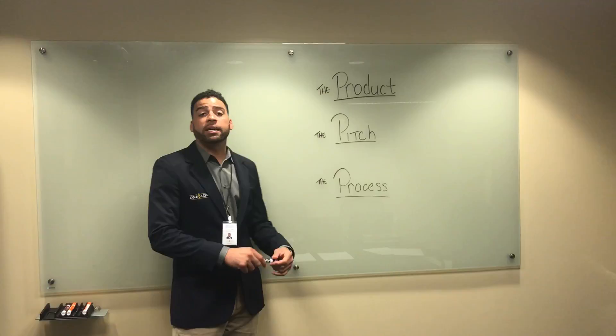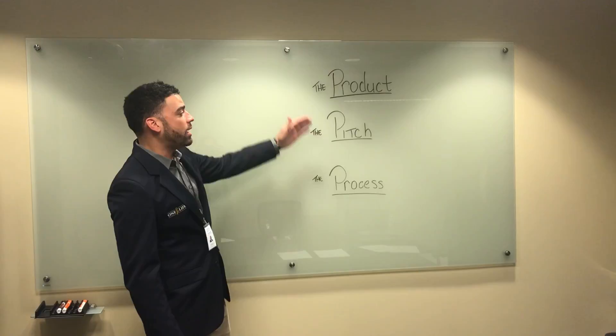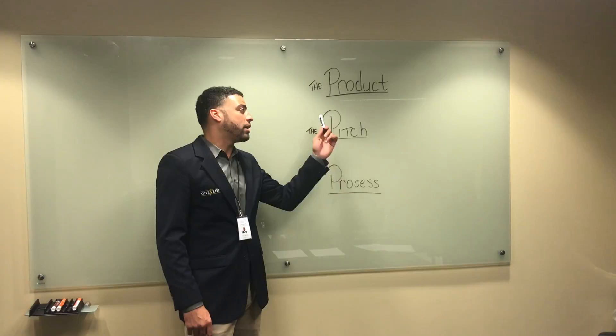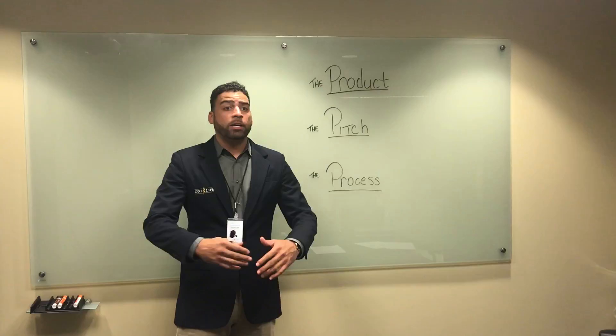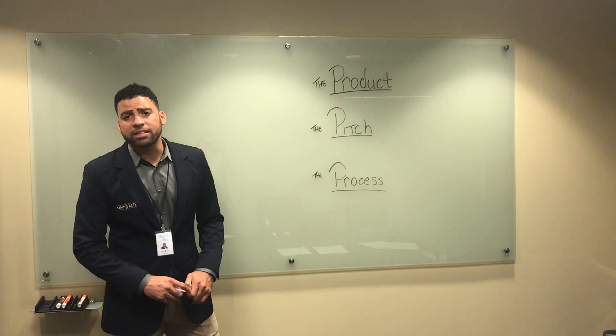With each of these products, you're going to learn three steps of the process. One: the product itself. This is the first part of the training where you're going to learn the actual product. Secondly, you're going to learn the pitch. This is honestly my favorite part and the easiest part to learn. It's simply what are you going to say to the client when you're sitting there with them. The third step, probably the most tedious but also the most important step of the process, is the full process. You're going to learn start to finish.